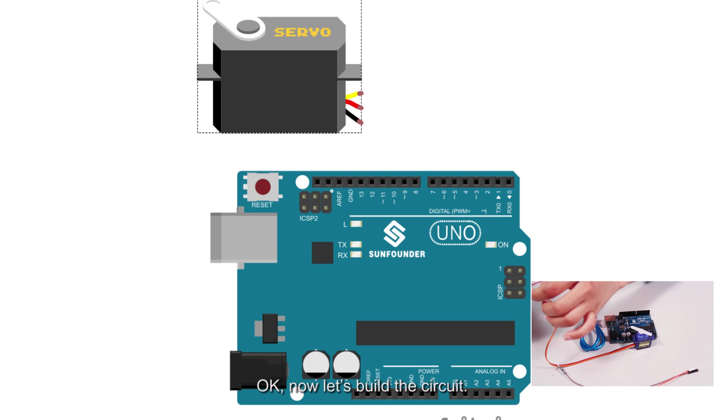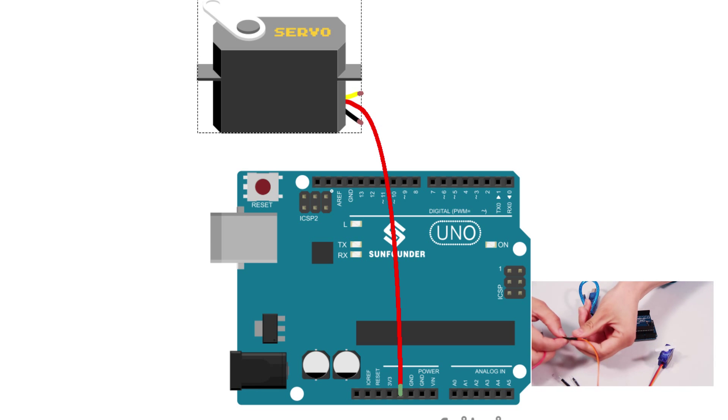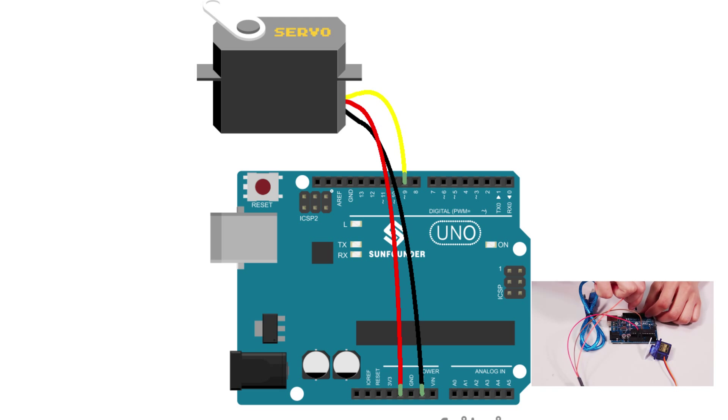Okay, now let's build a circuit. Hook up the orange wire to pin 9, the red to 5V, and brown to ground. The circuit is completed then.